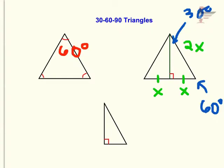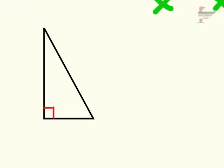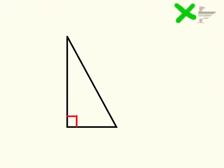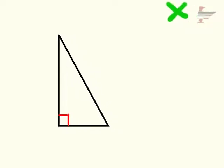That's how we get a 30-60-90 triangle. Now we take a look at one of these 30-60-90 triangles to find out how we can find the length of the last side.